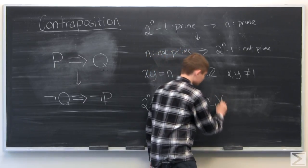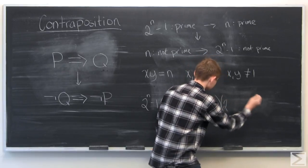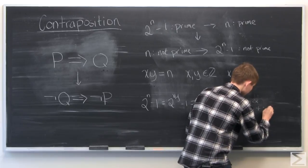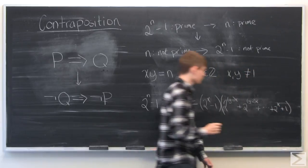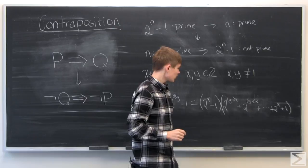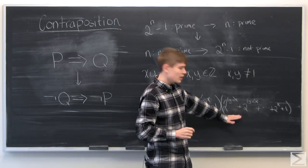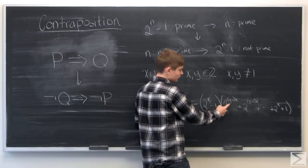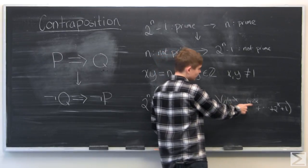...times this big polynomial which has y many terms, since you start off with x times y minus 1 in the exponent, and then you do y minus 2, y minus 3, all the way down to 2 to the x, and then plus 1.